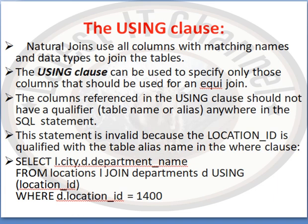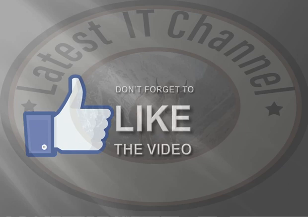This statement is invalid because the location_id is qualified with the table alias name in the WHERE clause. For example: SELECT l.city, d.department_name FROM locations l JOIN departments d USING (location_id) WHERE d.location_id = 14 — this is invalid because location_id in the WHERE clause should not be qualified with a table alias.